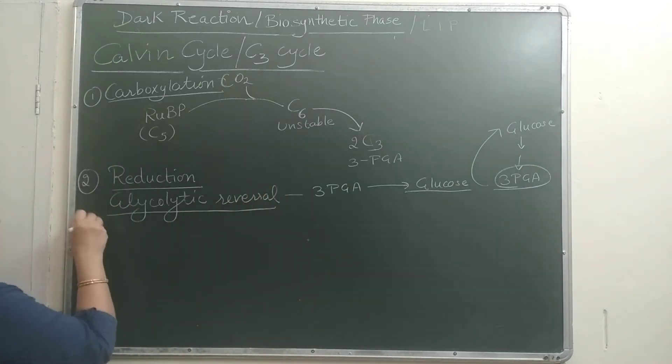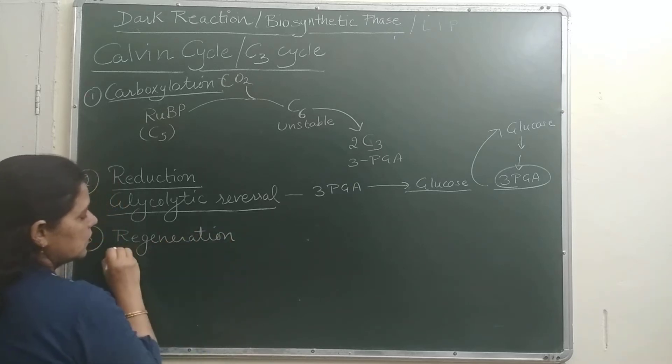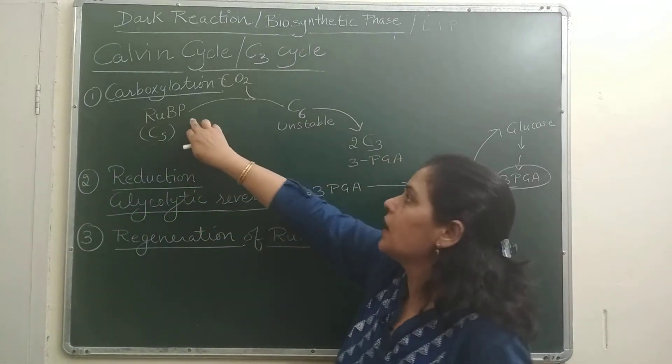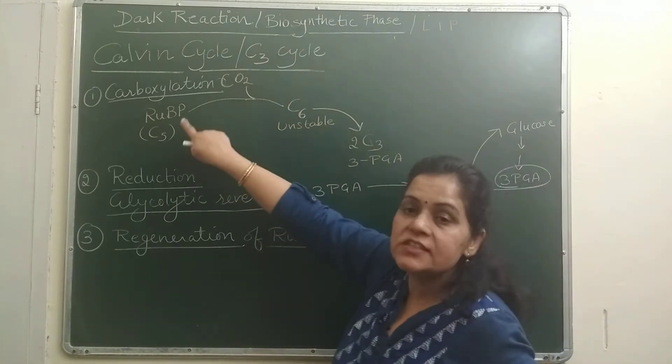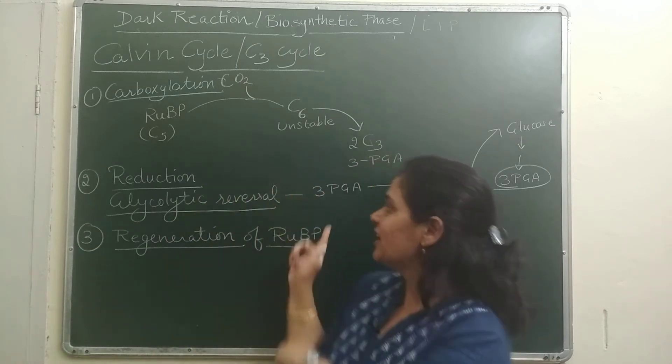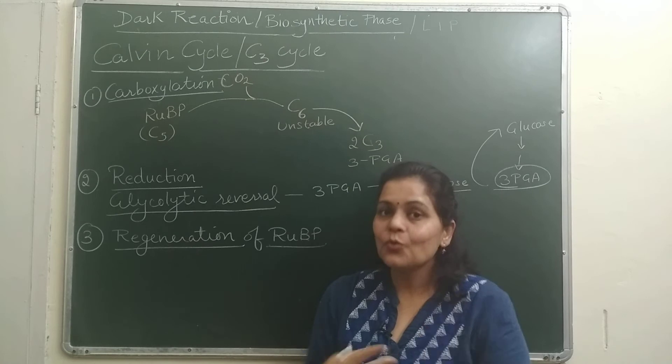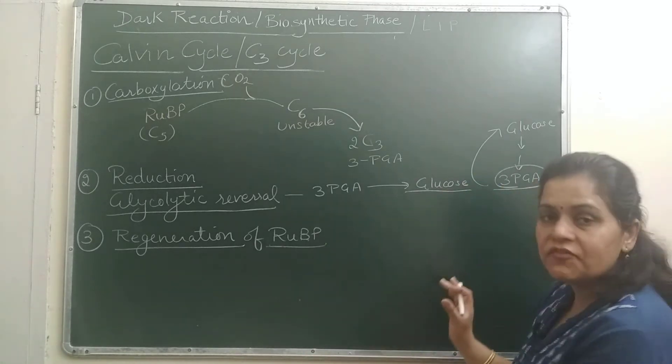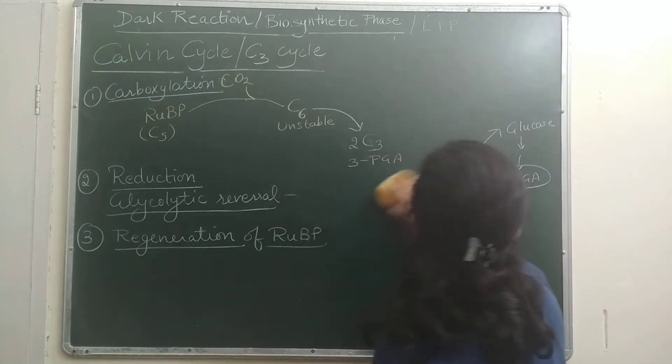Number 3 step will be regeneration of RuBP. RuBP should always be present, it is very necessary. If all RuBP combines, if all RuBP becomes glucose, then photosynthesis will stop. So in this Calvin cycle, to keep this cycle continuing, RuBP should be regenerated. So that is regeneration of RuBP, which is the third step. So now we will complete this cycle. Let's complete the simple cycle first, before we tell details.